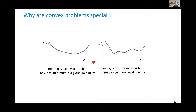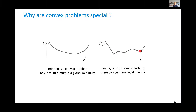Why are convex problems so special? If we minimize a convex function over a convex set, any local minimum is the global minimum — there can be no local minimum that is not the global minimum. This allows gradient-based solvers to work reliably. In contrast, for non-convex functions, you can be trapped in a local minimum that may be very far from the global optimum.